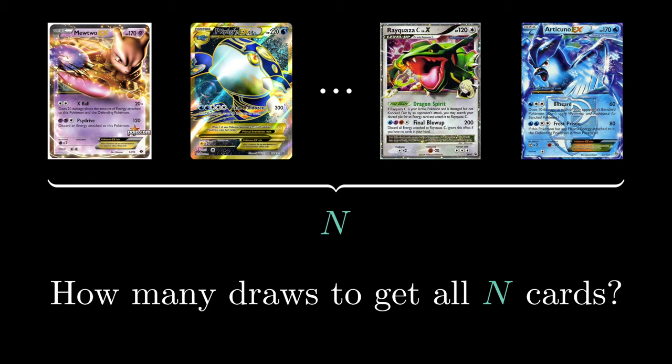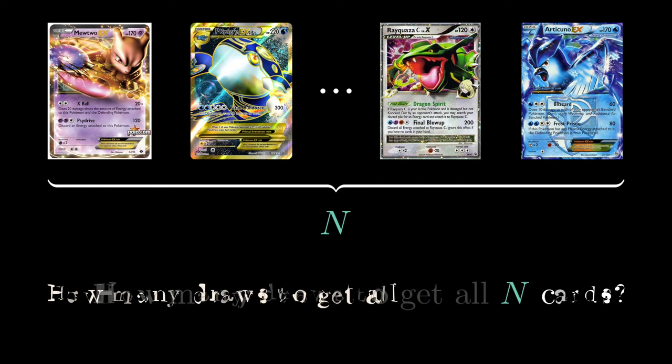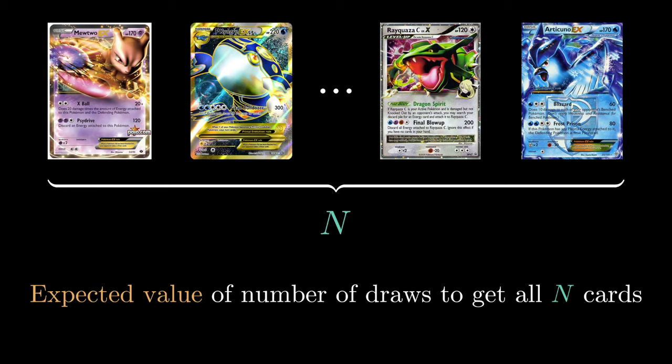More formally written, the question states: given N coupons, an equal probability to draw every single coupon, what's the expected value of the number of draws we need to perform to get all N coupons?